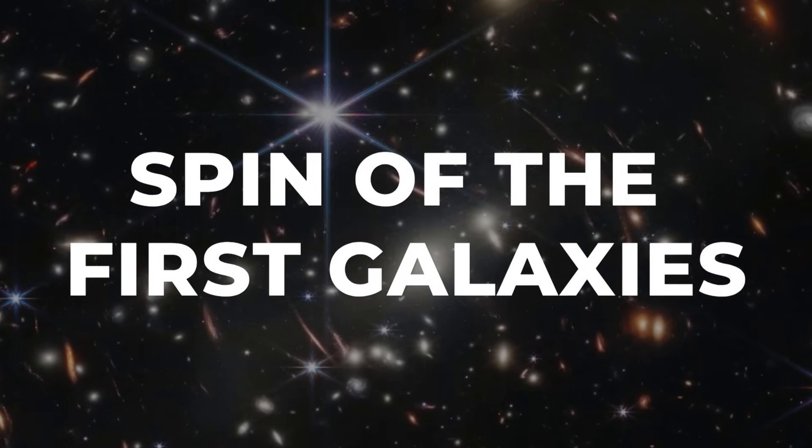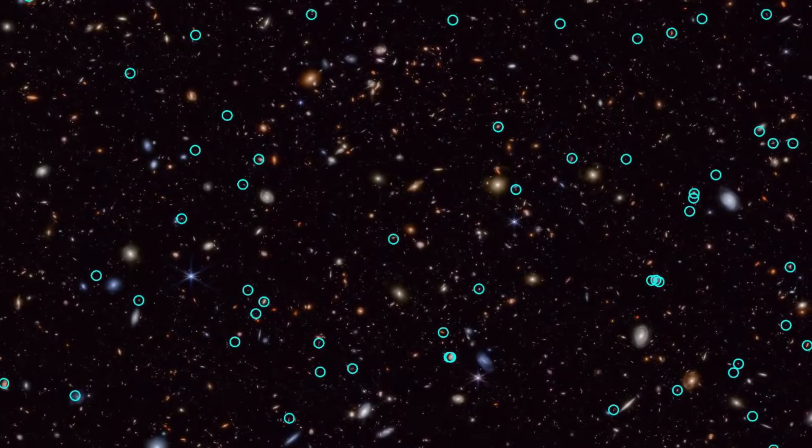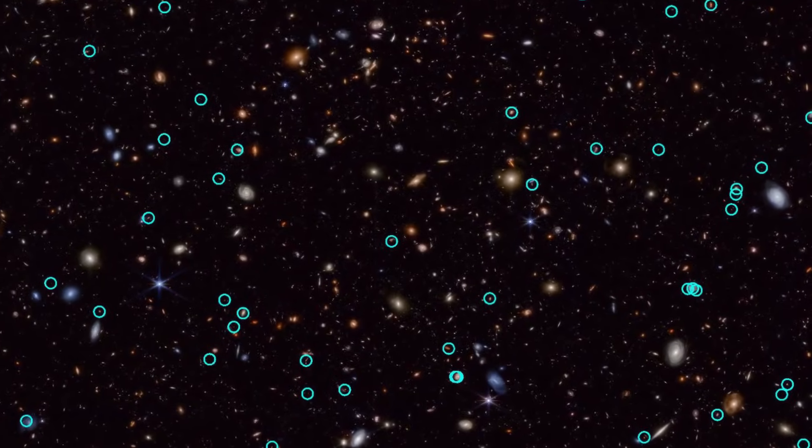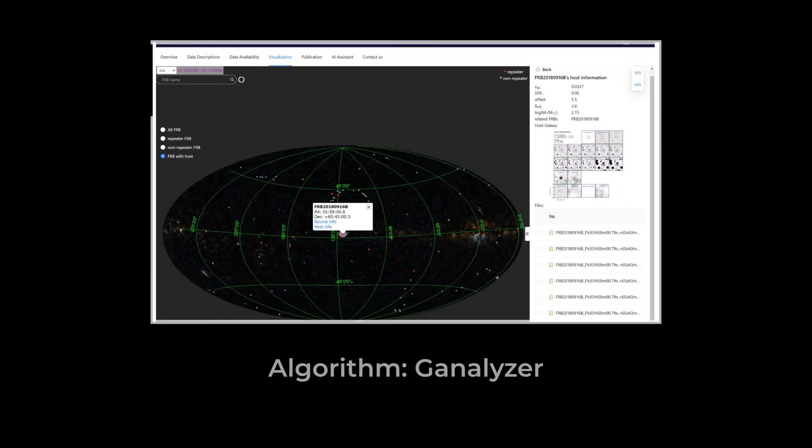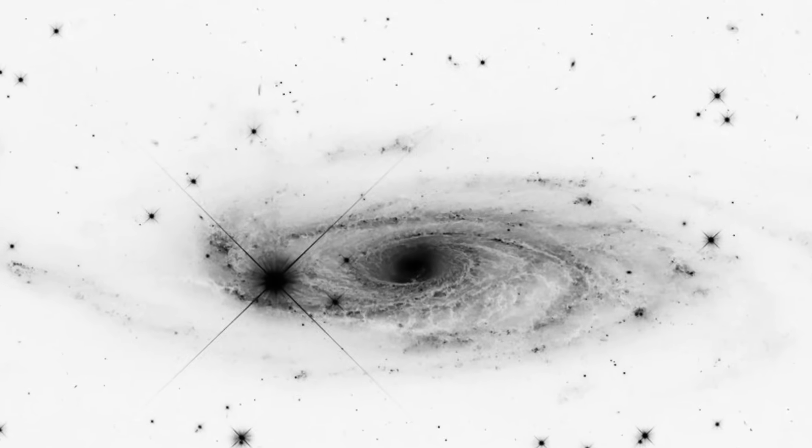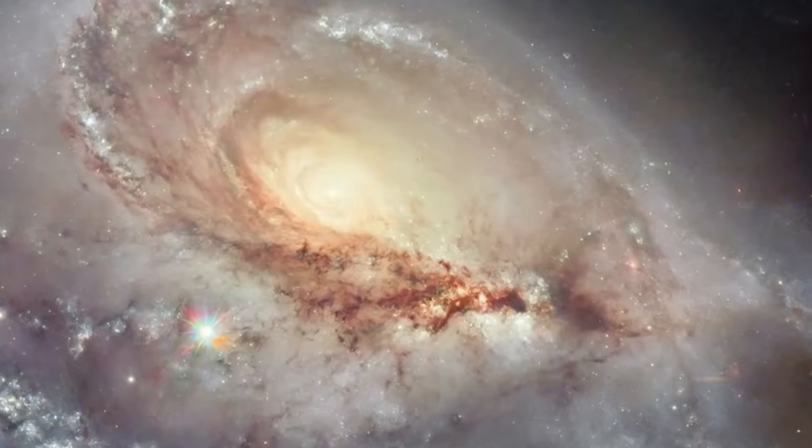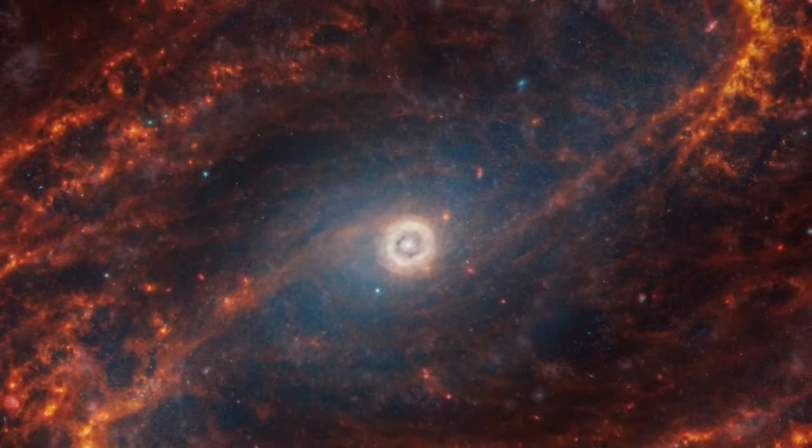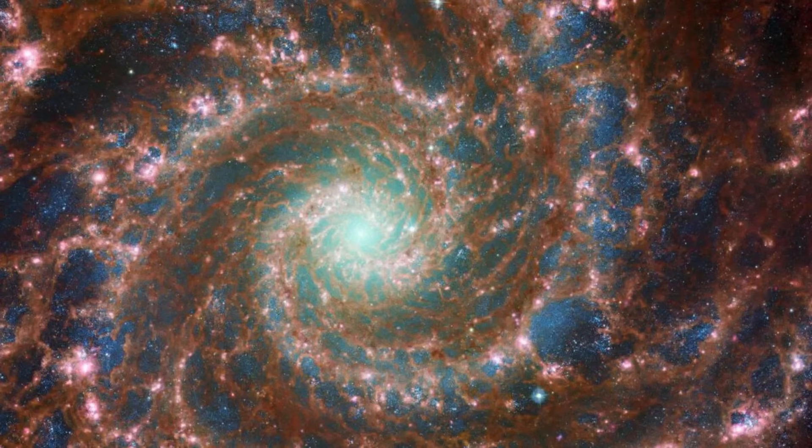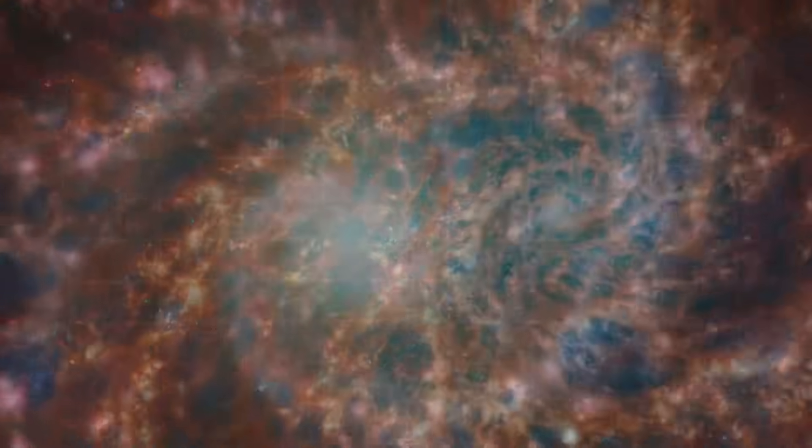Astronomers using the James Webb Space Telescope set out to answer a simple question. Do galaxies in the early universe spin randomly, or is there a hidden pattern? The JADE survey gave them a fresh window into deep space, capturing high-resolution images of 263 spiral galaxies, some of the farthest and oldest ever seen. To figure out which way these galaxies were turning, researchers turned to an algorithm called Ganalyzer. This software doesn't care about colors or brightness. It just traces the winding arms of each spiral, assigning a direction, clockwise or counterclockwise, based on their shape.